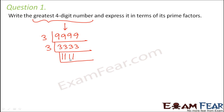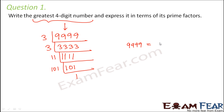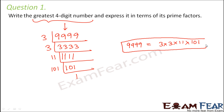Now, checking 1111 for divisibility by 2, 3, 4, 5 — none of those work. The smallest prime number by which it is divisible is 11, giving 101. And 101 is itself a prime number. So 9999 can be written as 3 × 3 × 11 × 101 — these are the prime factors of the greatest four-digit number.